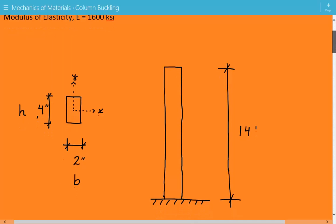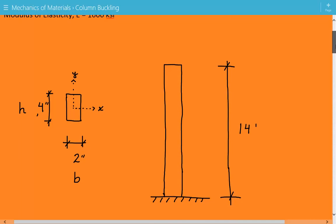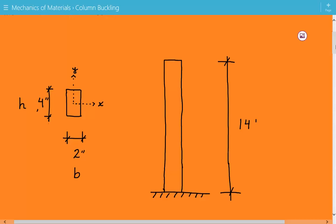Here's our figure of the wooden rectangular column. It's fixed at the bottom, free at the top. The unbraced length is 14 feet. To the left we have the cross section, 2 inches by 4 inches. The 2 inch dimension is B, the 4 inch dimension is H, and here's the X and Y axis for the local axis.